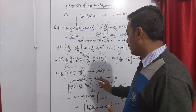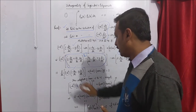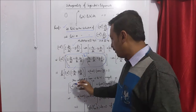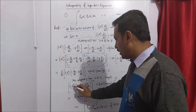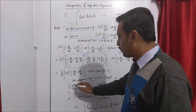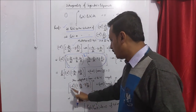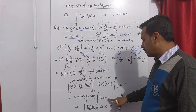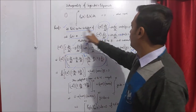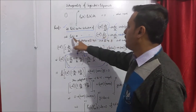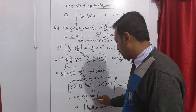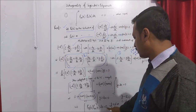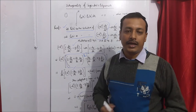Integrating from minus 1 to plus 1, the differentiation and integration cancel. Putting the limits: at x equals 1, 1 minus 1 squared is 0; at x equals minus 1, minus 1 squared is 0, so that term vanishes. Then (n minus m)(n plus m plus 1) times integral from minus 1 to plus 1 of yz dx equals 0. Since y is Pn(x) and z is Pm(x), the integral from minus 1 to plus 1 of Pn(x) Pm(x) dx equals 0 if n is not equal to m.